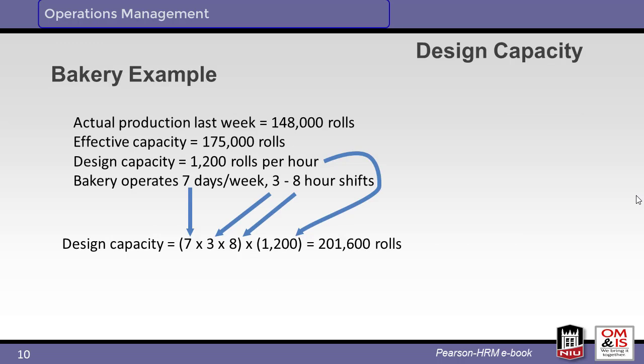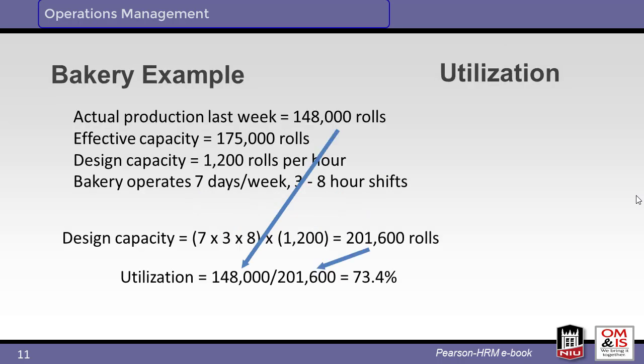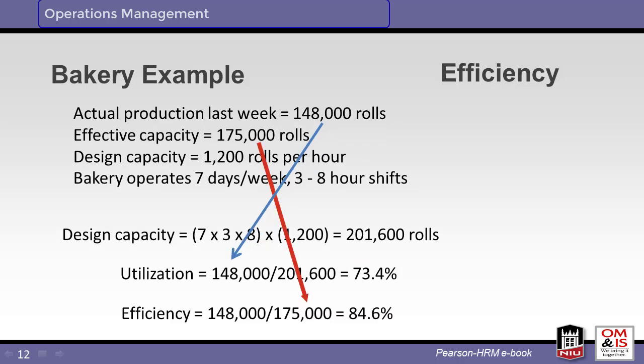In this example, the design capacity of a bakery is calculated using the defined variables to result in 201,600 rolls per week. We calculate the utilization by comparing the actual output to the design capacity, resulting in 73.4%. The efficiency is calculated as 84.6%.